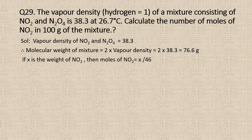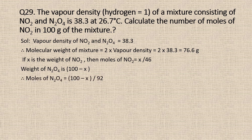Now if x is the weight of NO₂, then moles of NO₂ will be equal to weight divided by molecular weight of NO₂, which is equal to x divided by 46. Since the total weight of the mixture is 100 grams and x is the weight of NO₂, the weight of N₂O₄ is (100 − x) grams. Therefore, moles of N₂O₄ is equal to (100 − x) divided by 92.